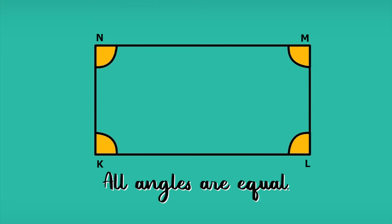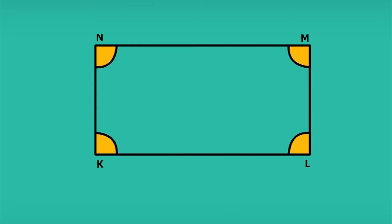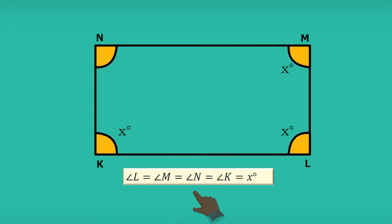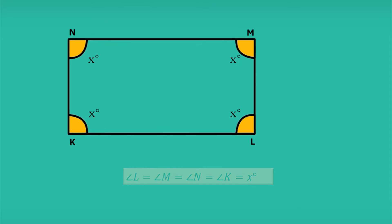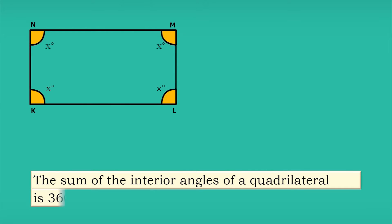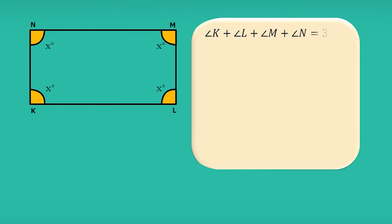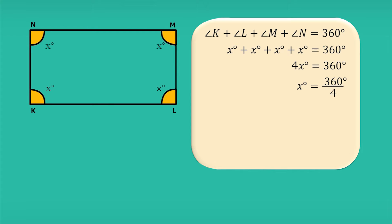All angles are equal. In this parallelogram, suppose angle K equals x degrees. Since all angles are equal, angle L equals angle M equals angle N equals angle K equals x degrees. We know that the sum of the interior angles of a quadrilateral is 360 degrees, so x + x + x + x = 360 degrees, that is 4x = 360 degrees, therefore x = 90 degrees.